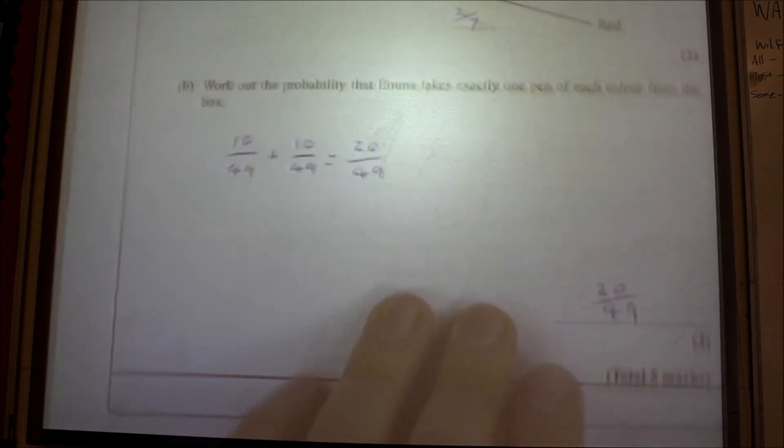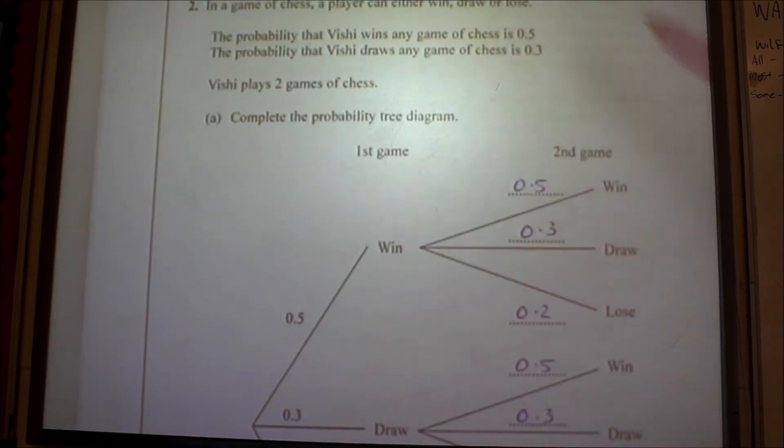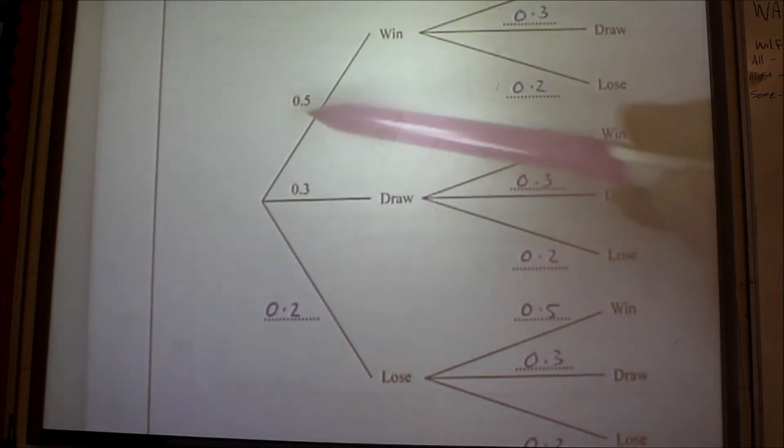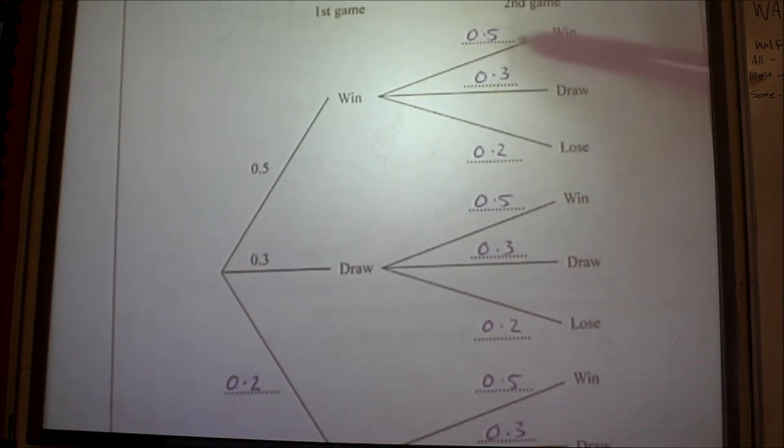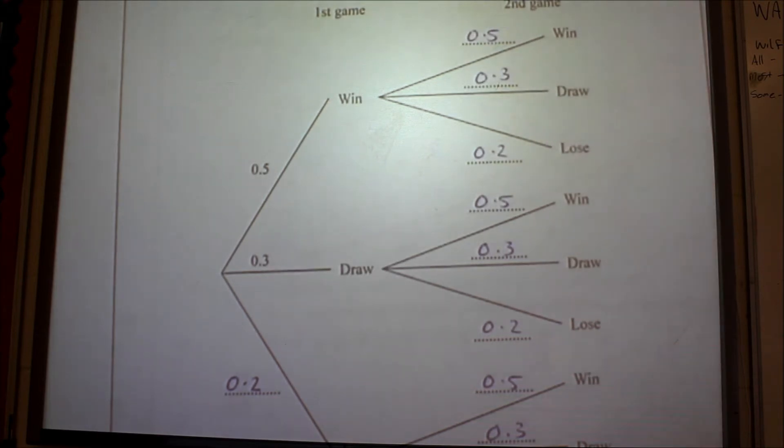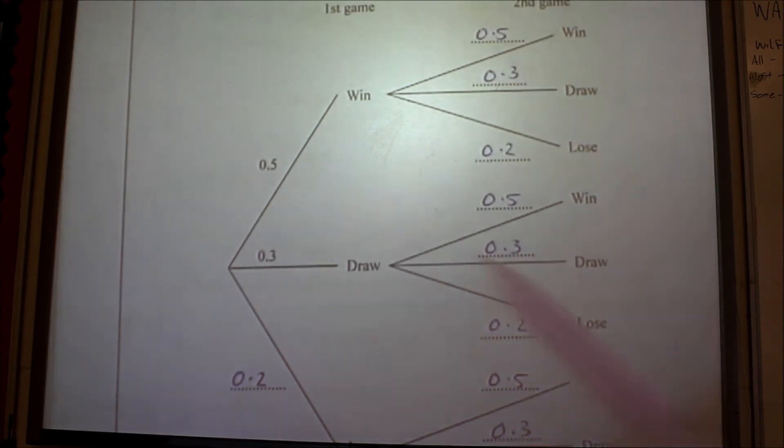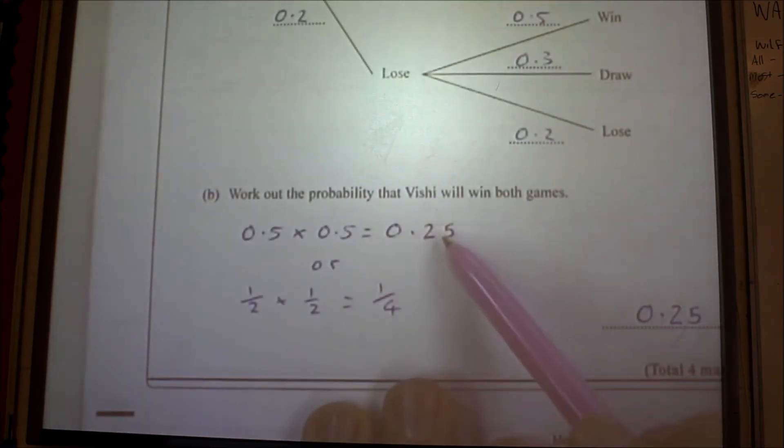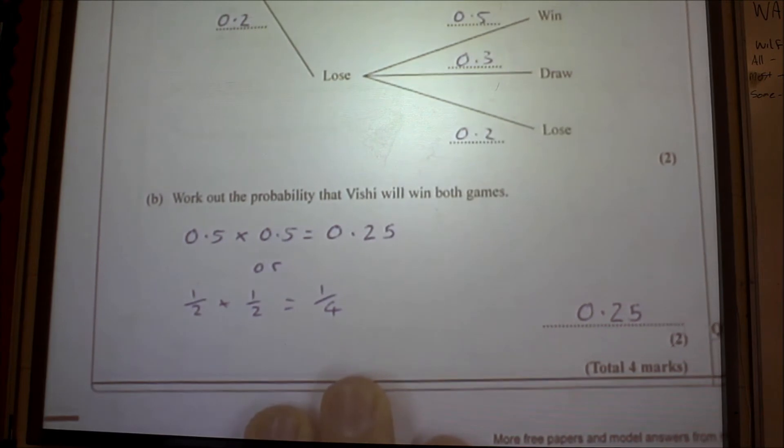Question number two. In a game of chess, a player can win, lose, or draw. You've got to fill this in to start with: that's 0.5, 0.3, that's got to be 0.2 because it must add up to one. And again, you need to use those ones over here for the second game. Work out the probability that Vichy will win both games. So obviously that's a win followed by another win. That's 0.5 times 0.5, which is 0.25. Or if you don't like multiplying decimals, it's a half times a half, which is a quarter, because one times one is one, two times two is four. So I gave the answer as a decimal.